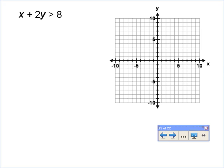To do that, we graph the line first. We're going to subtract x, so you're going to have 2y is greater than negative x plus 8. Then divide everything by 2, and that gives me y is greater than negative 1/2x plus 4.